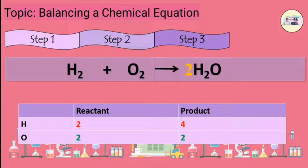So, apply a factor of 2 to H2 compound, we get 2H2 plus O2 gives 2H2O.